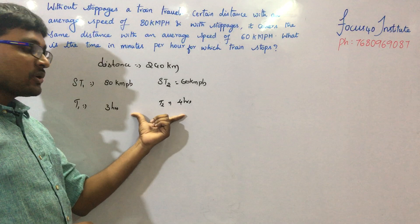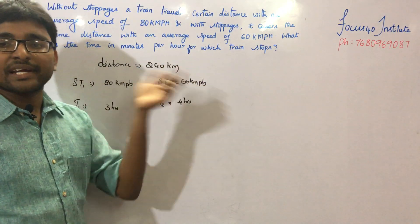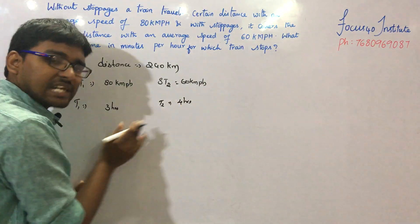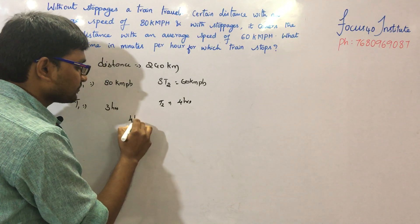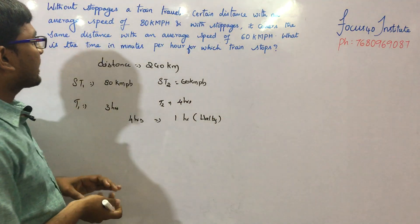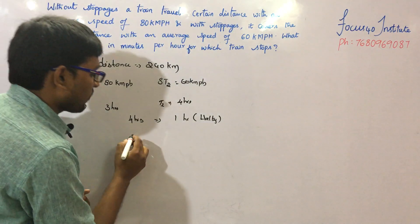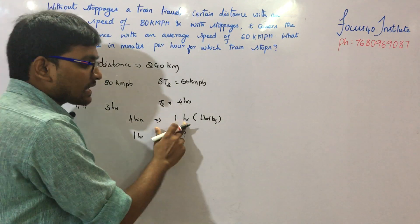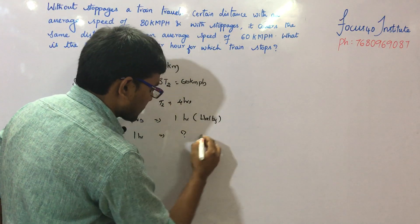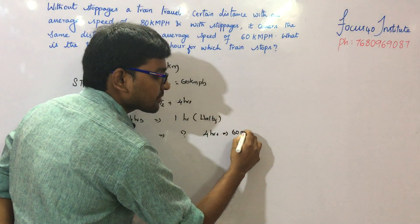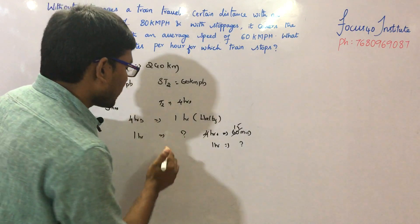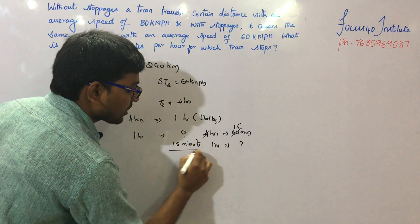The time gap between the two cases is 4 minus 3, which equals 1 hour. Now, 1 hour is 60 minutes. So in 4 hours, the train stops for 1 hour, meaning per hour it stops for 60 divided by 4, which is 15 minutes. Total halting time per hour is 15 minutes.